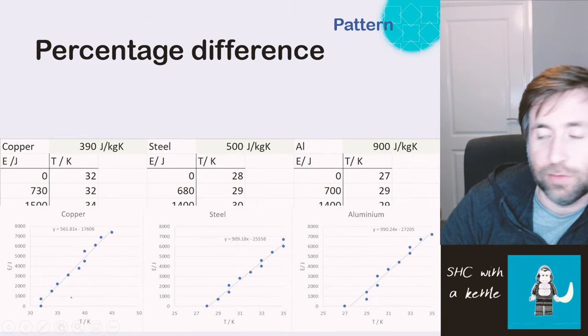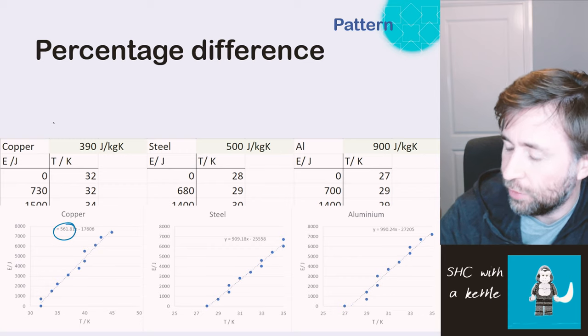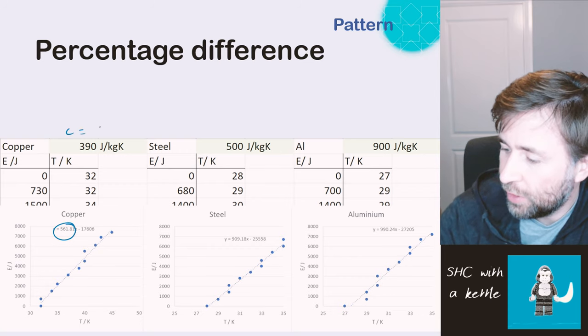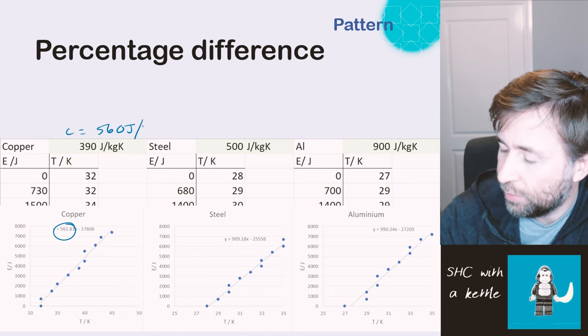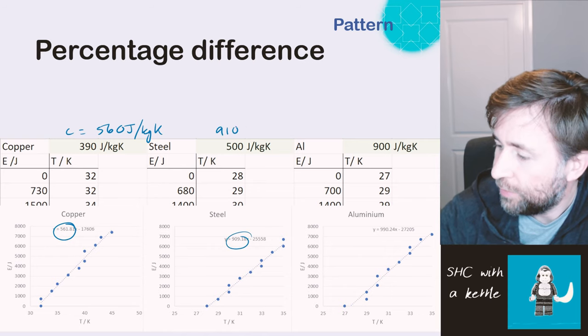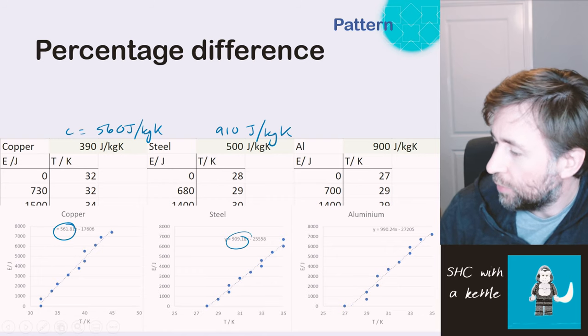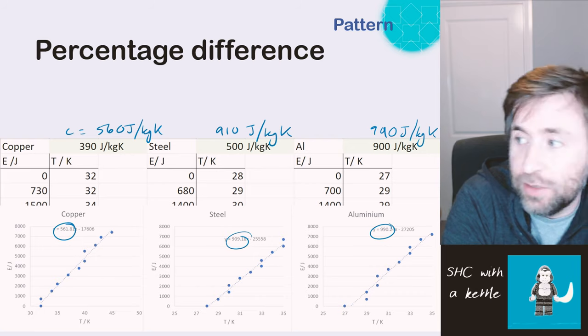Here they are then. Here are the three graphs, and you can see the gradient here. So our measured value for copper was 560 joules per kilogram per degree Kelvin. Steel, our measured value was 910 joules per kilogram per degree Kelvin, and aluminum was 990. So some of them were closer than others.